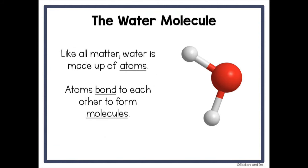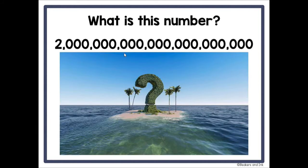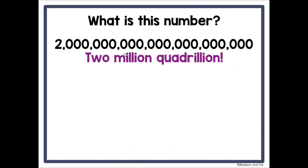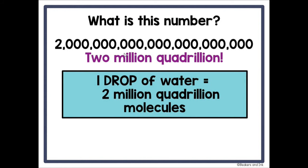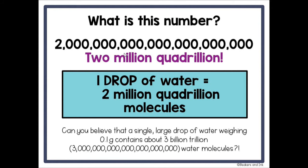Here's a picture of a very basic simple water molecule. All matter is made up of atoms and water is no different. We know that atoms bond to each other to form molecules. A molecule is the smallest piece of that compound that has the same properties. Take a look at this number. Do you have any ideas what it might be? It's not 2 million, it's not 2 billion. It is actually 2 million quadrillion. Why would we look at a number that big when we're talking about water? Well, it kind of blows my mind that one drop of water has 2 million quadrillion molecules.